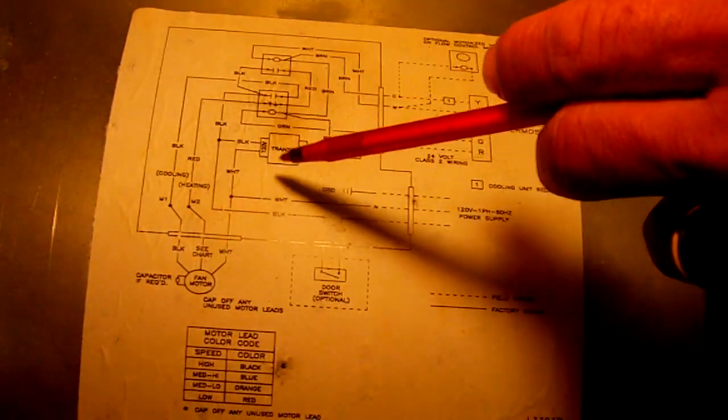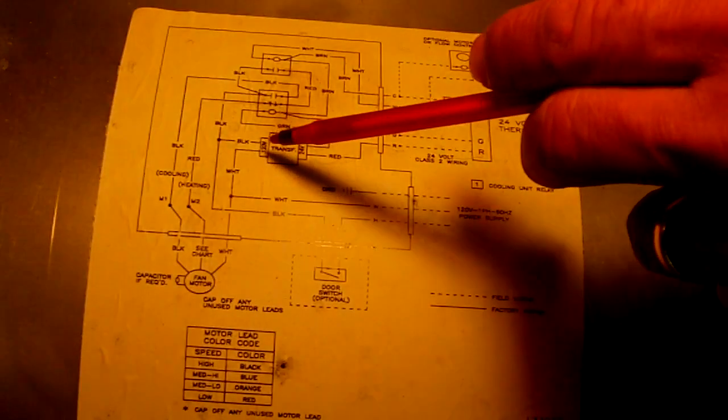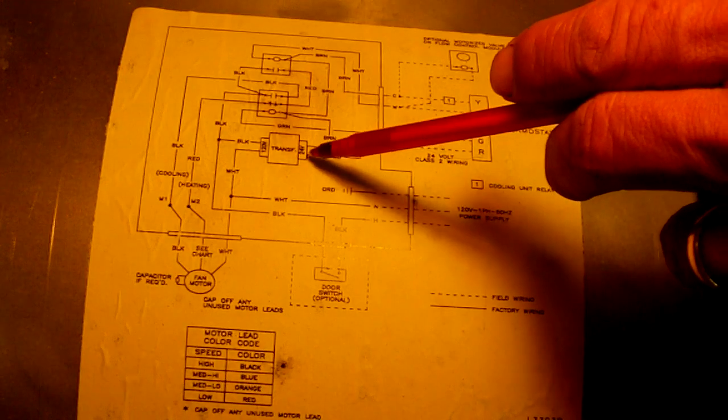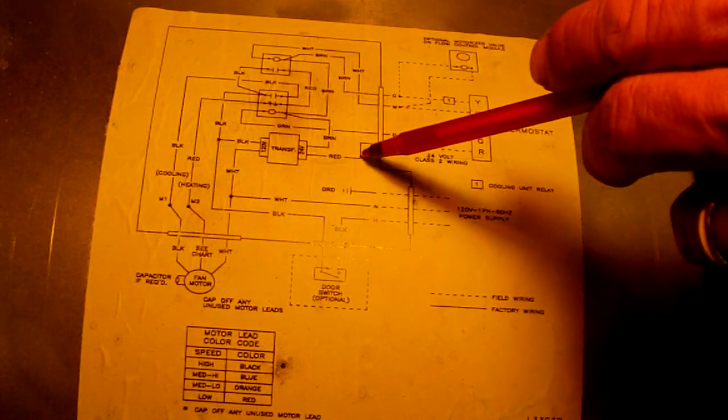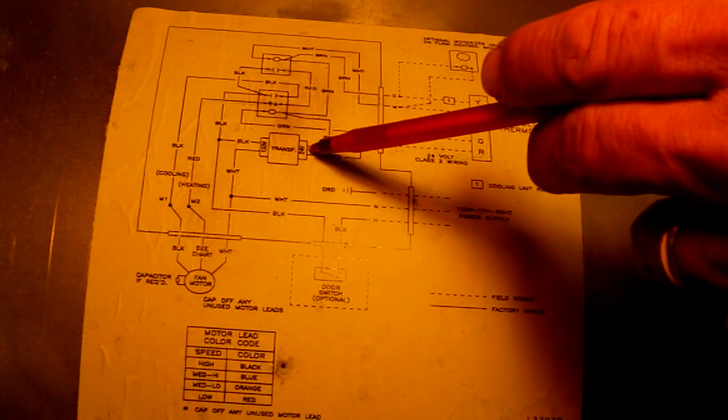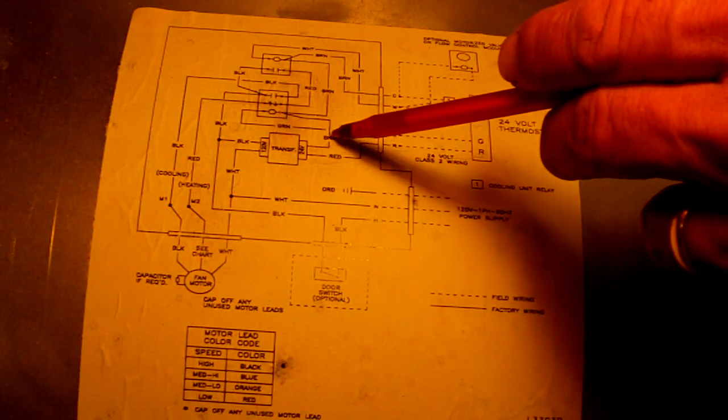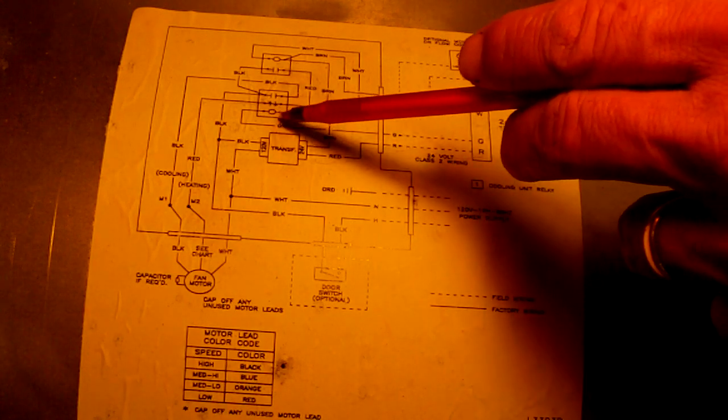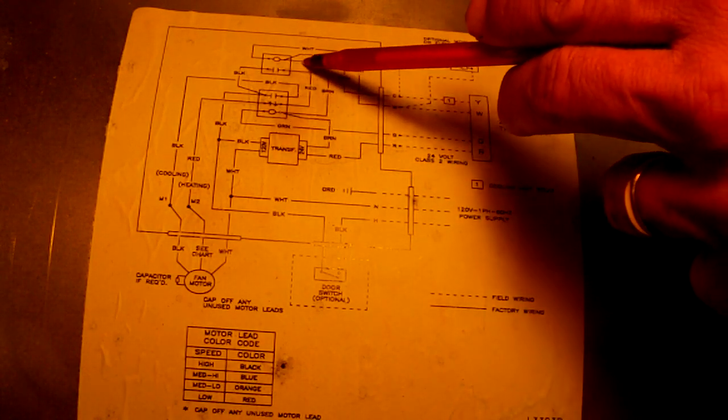On the other side, let's go back to the transformer. This is a step-down transformer, 24 volt. Red wire coming straight out to the thermostat block to R. The common wire goes to the relay, jumps out, and goes to the heat sequencer on this side.